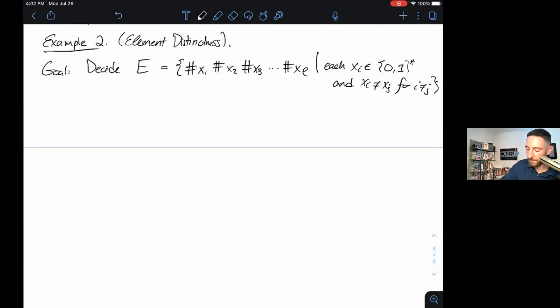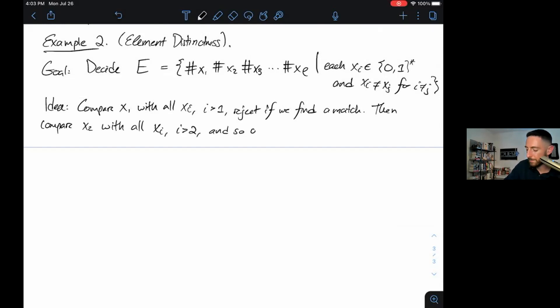The idea here will also be sort of a looping structure. We'll compare x1 with all the xi's, i greater than 1, and then reject if we find a match. Then compare x2 with all xi, i greater than 2, and so on. We'll compare x1 with x2, x3, x4, blah blah blah. Then x2 with x3, x4, x5, x3 with x4, x5, x6, until we have run out of pairwise comparisons to make. If at any point we find a match, we'll reject. If at any point we have finished the comparisons, then finally we'll accept.